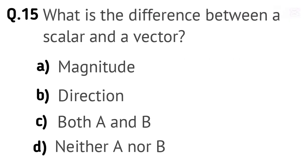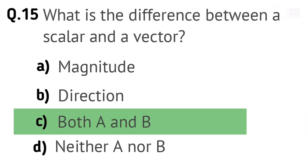Question 15. What is the difference between a scalar and a vector? Options: A. Magnitude. B. Direction. C. Both A and B. D. Neither A nor B. Right answer is C. Both A and B.